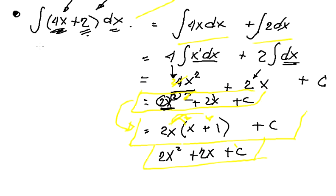Therefore, the integral of the two functions 4x plus 2 dx is 2x squared plus 2x plus c, or equivalently 2x(x plus 1) plus c.